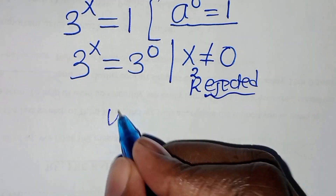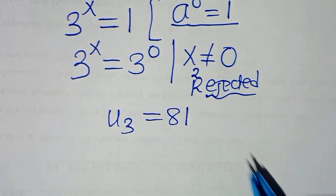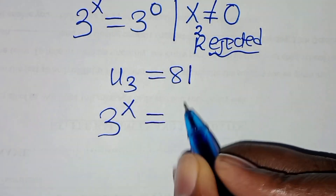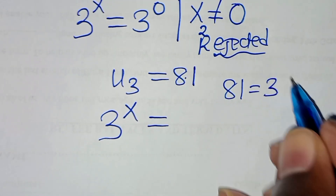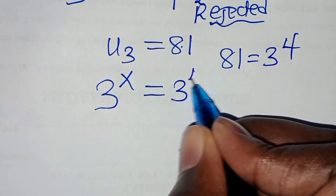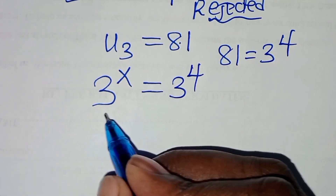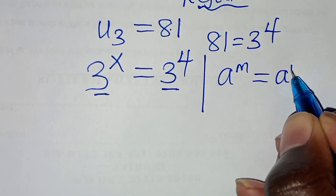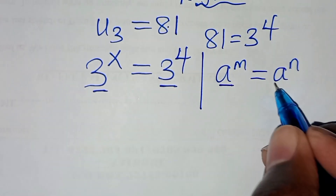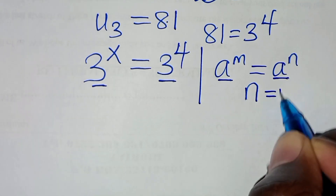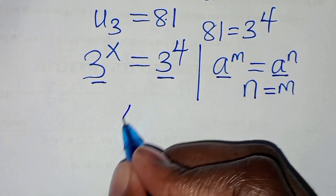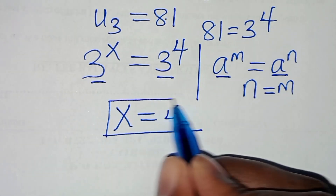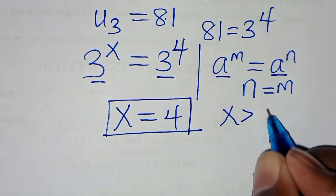Proceeding with u₃ equals 81: we have 3 to the power of x equals 81. Since 81 equals 3 to the power of 4, we get 3 to the power of x equals 3 to the power of 4. Since the bases are equal, x equals 4. This satisfies x greater than 0.